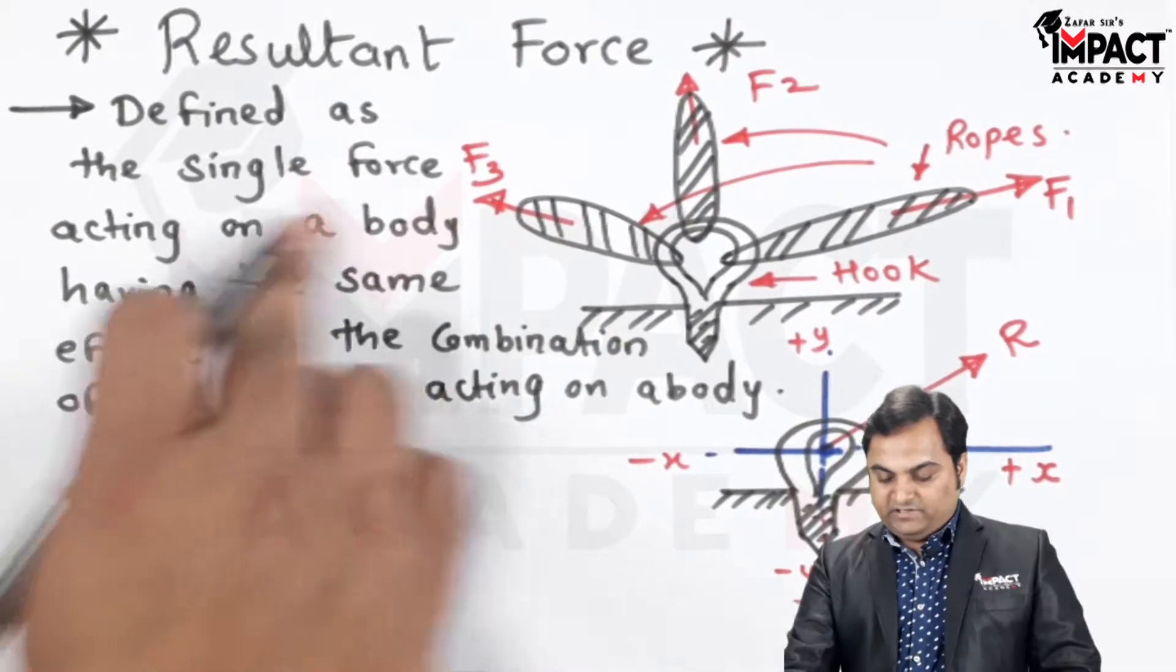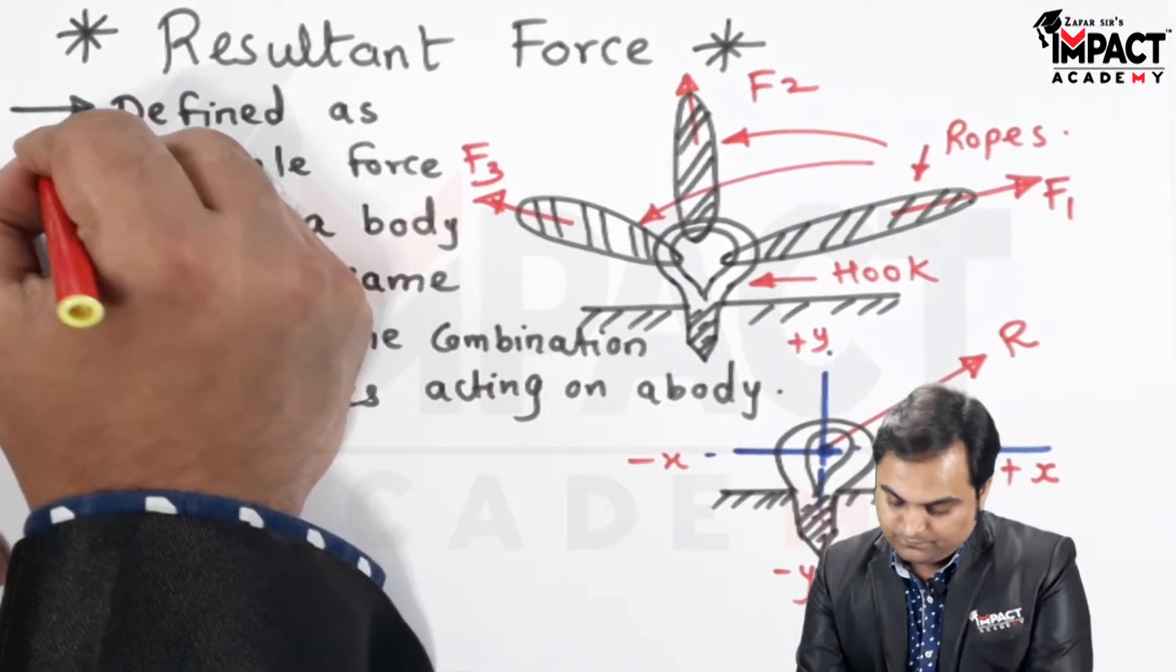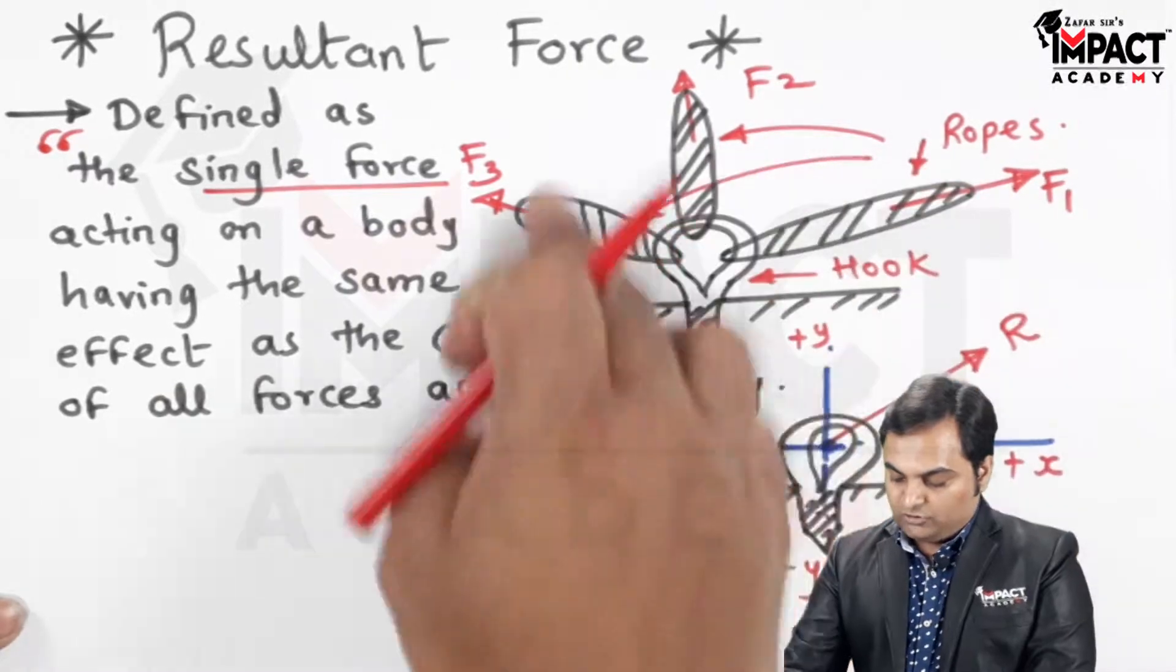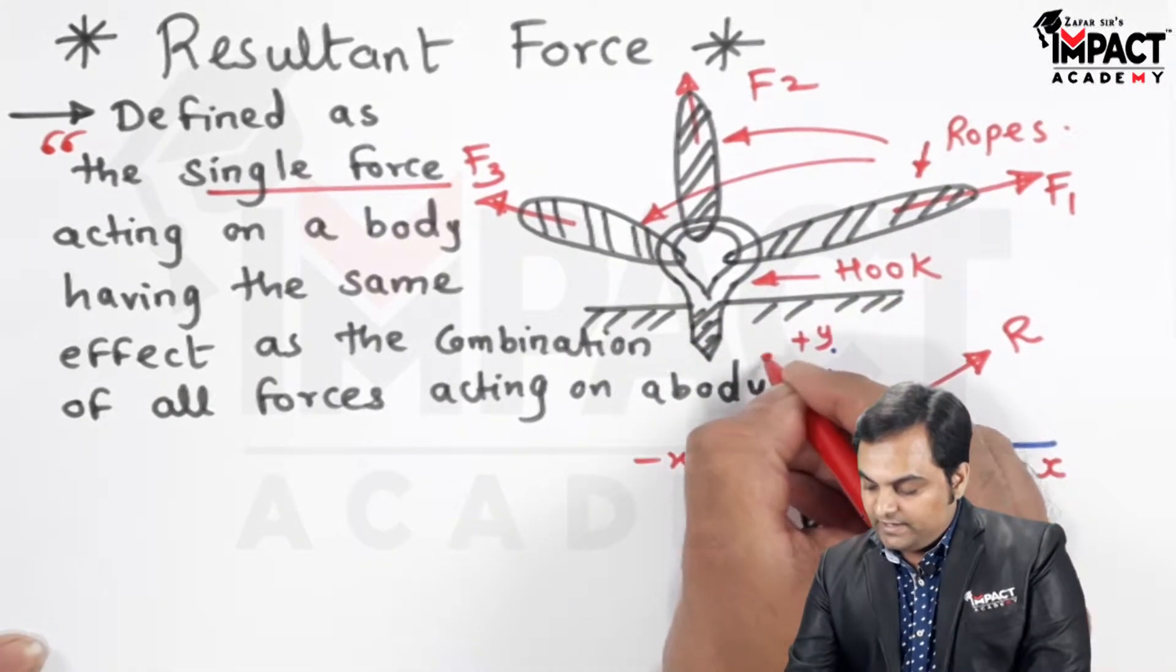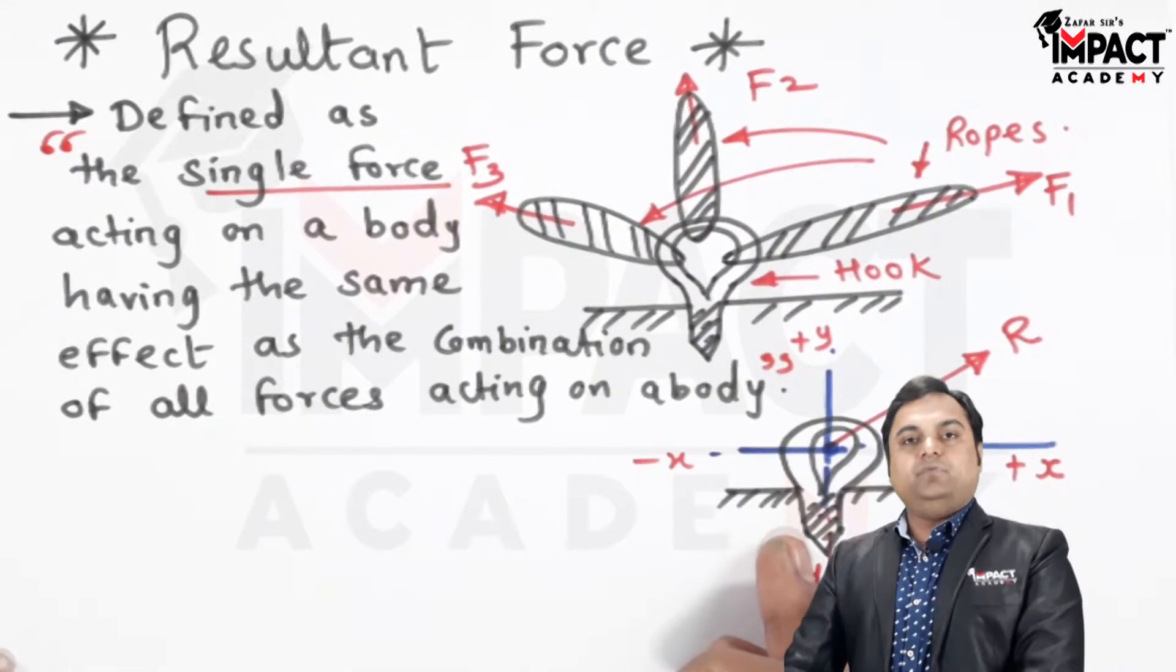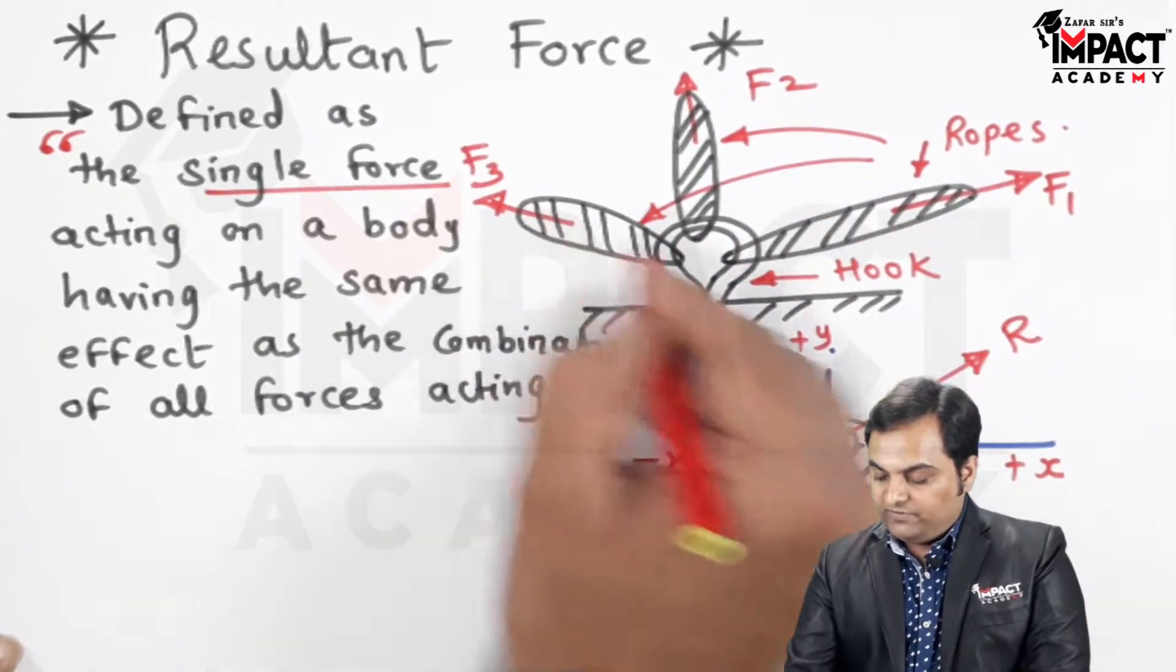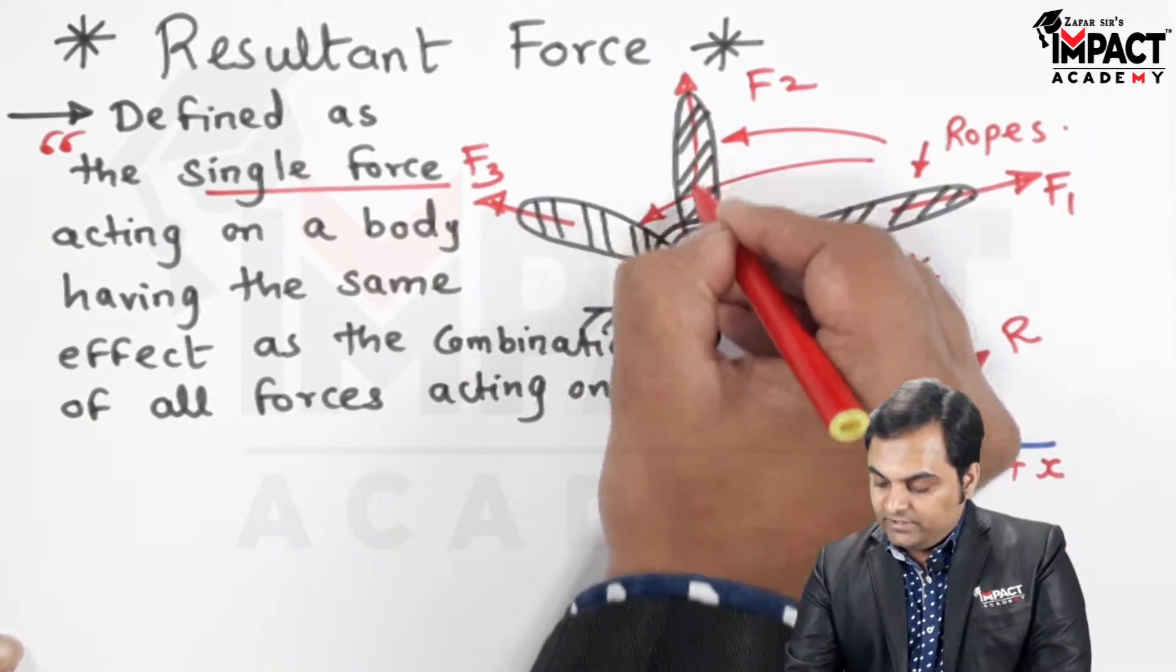So resultant is defined as a single force acting on a body having the same effect as the combination of all the forces acting on a body. Now, the example which I have taken here is of concurrent forces because all these forces are having contact with a common point.